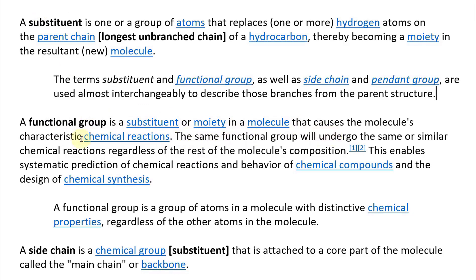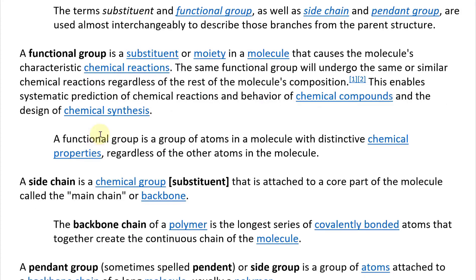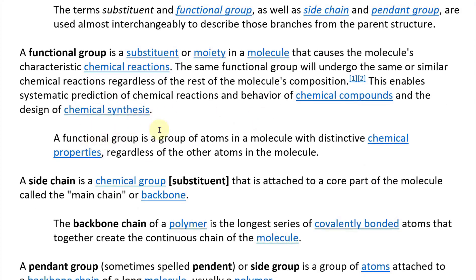A functional group is a substitution or moiety in a molecule that causes the molecule's characteristic chemical reactions. The same functional group will undergo the same or similar chemical reactions regardless of the rest of the molecule's composition. This enables systematic prediction of chemical reactions and behavior of chemical compounds, and the design of chemical synthesis.